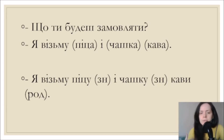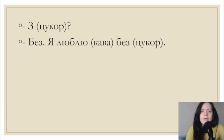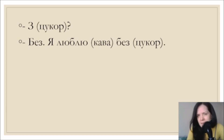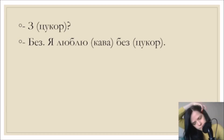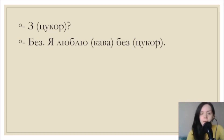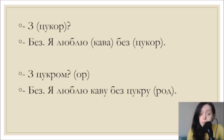As a continuation of that dialogue: з цукром - with sugar, без цукру - without sugar. Я люблю каву без цукру - I like coffee without sugar. The correct answers are: з цукром - instrumental case; я люблю каву - accusative as the direct object of люблю; без цукру - after the preposition без meaning without, we use genitive case.